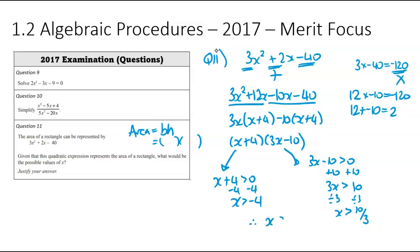Therefore, x must be greater than 10/3 to have sides and a positive area. So this wraps up the merit questions from the 2017 exam. Hopefully you found it useful. Keep an eye out for the other videos coming out soon.